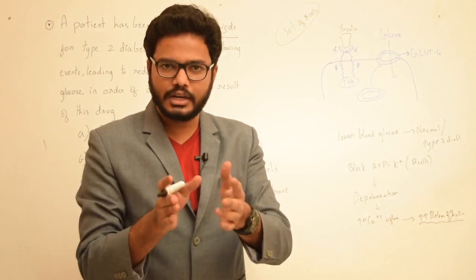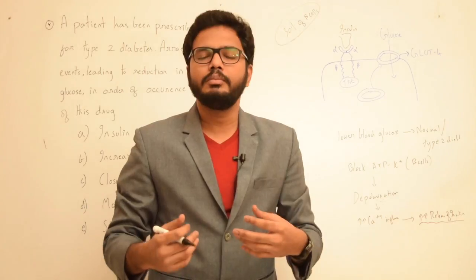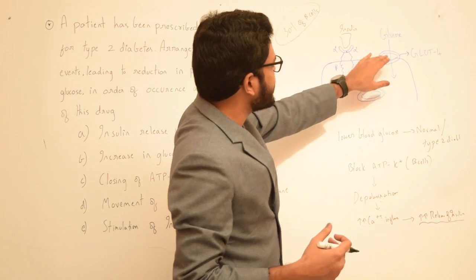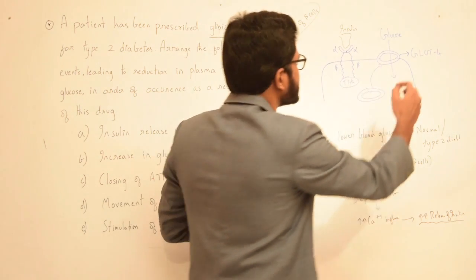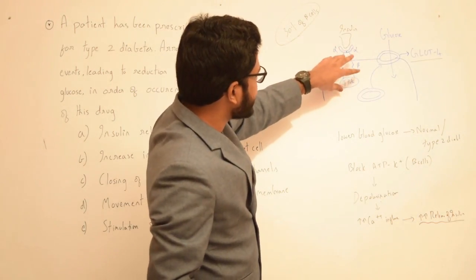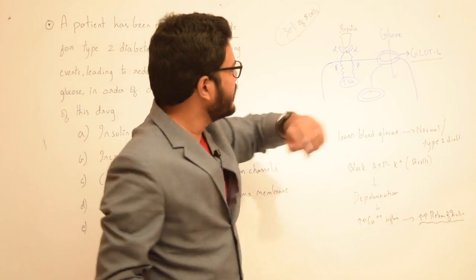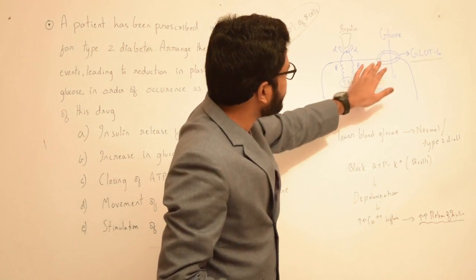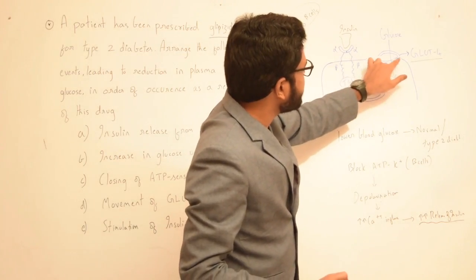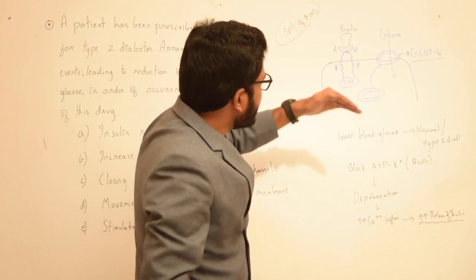Because of these phosphorylation reactions mediated by tyrosine protein kinases, there will be translocation of GLUT4 from within the cell towards the plasma membrane. GLUT4 is a glucose transporter. Because of this series of cascade phosphorylation reactions after binding of insulin to the receptor, there will be movement of this GLUT4 transporter towards the plasma membrane, resulting in influx of glucose.